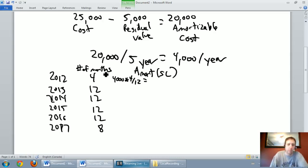It's $1,333 and I'm just going to round to the dollar here. So our amortization for the year 2012 is $1,333. For 2013 we're going to take $4,000 times 12 twelfths because it's 12 out of 12 months, so it's just $4,000. Same thing for 2014 it'll be $4,000, 2015 it'll be $4,000, 2016 will be $4,000, and 2017 we've got to go $4,000 times eight twelfths and that's $2,667.